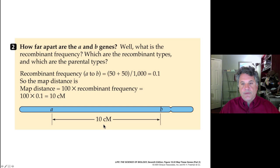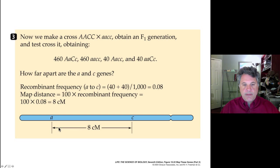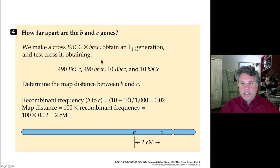Likewise, we do the same analysis for the A and C genes: we make a dihybrid heterozygous for A and C alleles, do a test cross to double recessive little a, little c stock, and find 80 recombinant chromosomes out of a thousand — a recombination frequency of 8%, placing A and C 8 centimorgans apart. For B and C, we create a dihybrid heterozygous for B and C, back-cross to a doubly recessive tester, and find only 2% recombinant chromosomes — 20 out of 1,000 — so B and C are 2 centimorgans apart.